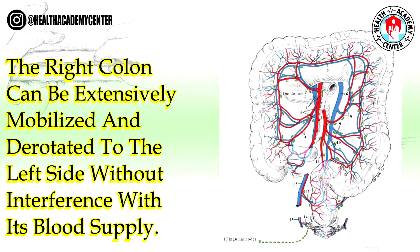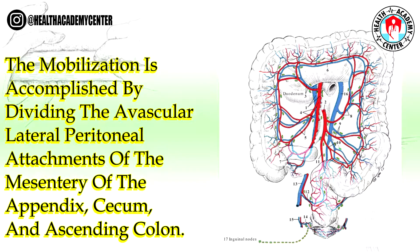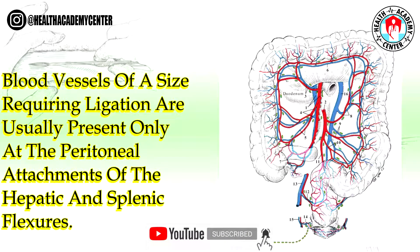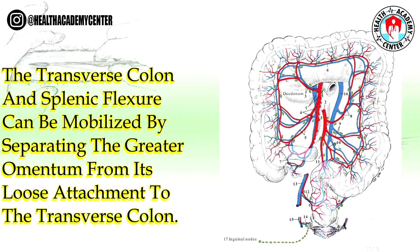The right colon can be extensively mobilized and rotated to the left side without interference with its blood supply. The mobilization is accomplished by dividing the avascular lateral peritoneal attachments of the mesentery of the appendix, cecum, and ascending colon. Blood vessels of a size requiring ligation are usually present only at the peritoneal attachments of the hepatic and splenic flexures.